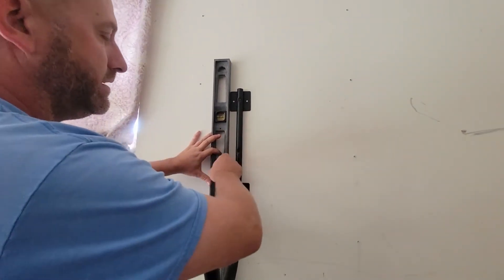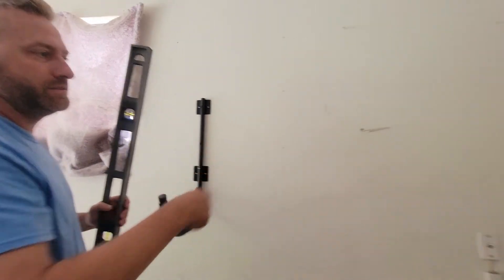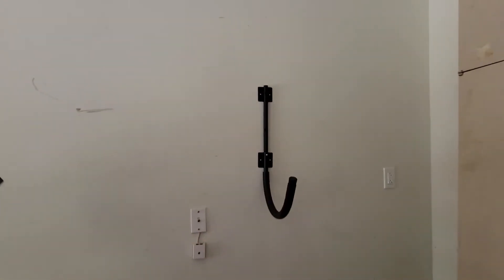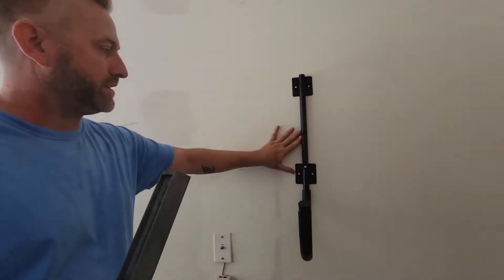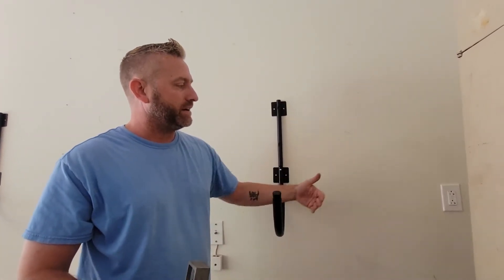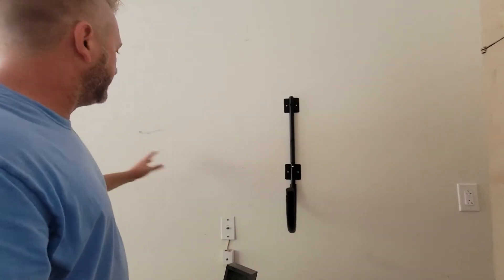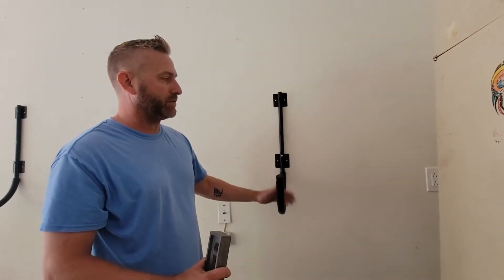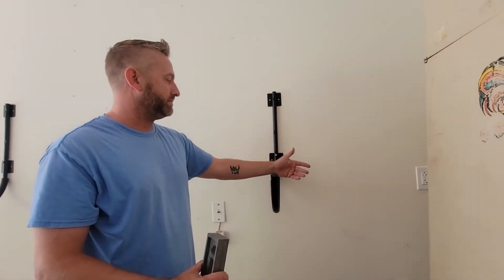So one thing that I did see online was that it does suggest that you have at least 15 inches of the kayak overhanging on each side. You can see I've mounted this where I want to have a little bit more than that, but there's no really specific suggested distance in between the two. So the distance in between mine is just a bit over five feet.